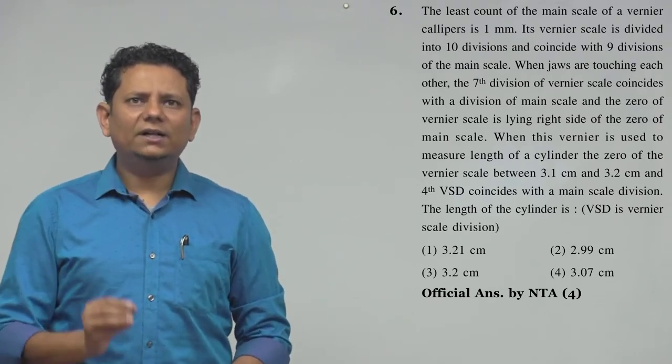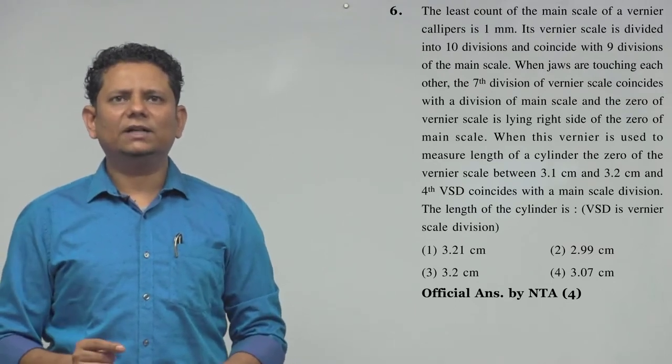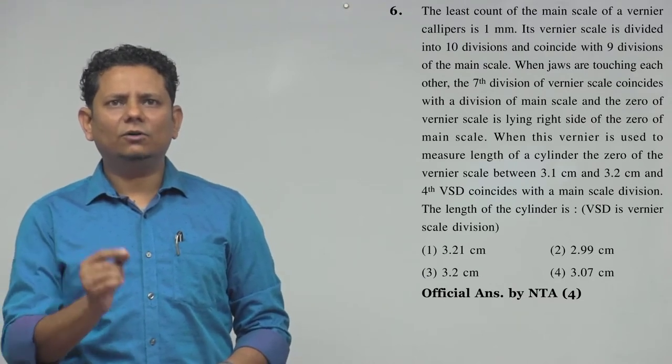The seventh division of vernier scale coincides with a division of main scale and the zero of the vernier scale is lying right side of the zero of main scale.